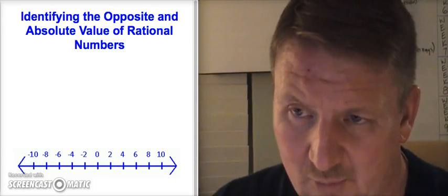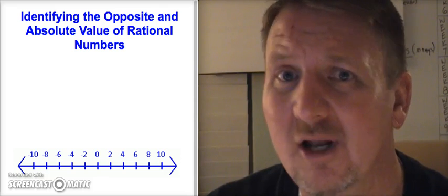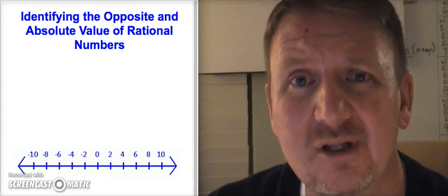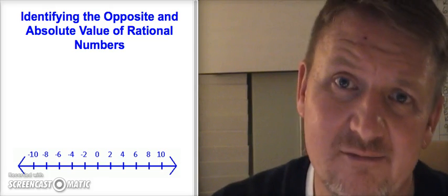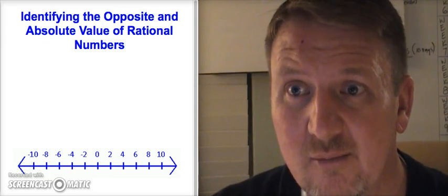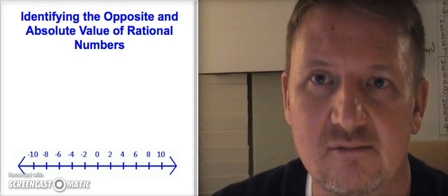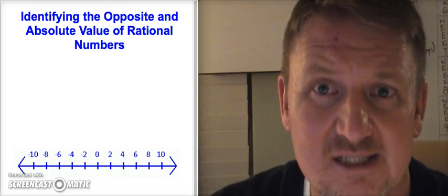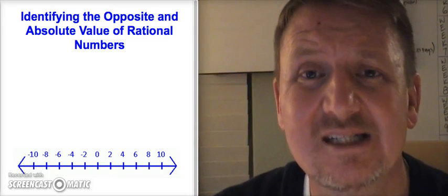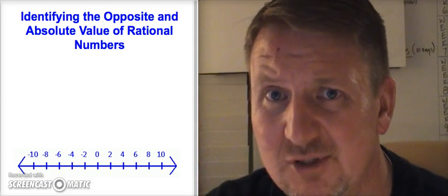First, think about positive and negative numbers in general. Going to the right of zero on the number line gives positive numbers — the further right you go, the bigger they get. Negative numbers go to the left of zero — the further left you go, the smaller the number gets. This applies anywhere on the number line: if I'm at nine and go left to five, five is less than nine. Similarly, negative 17 is less than negative 9 because it's further left.